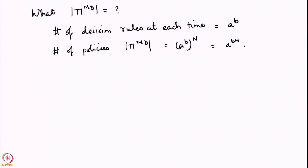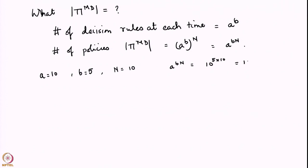Let us run through this calculation and see how big this number could be. Suppose a is 10, meaning you have 10 possible actions, and suppose you have 5 possible states, so b is 5, and a time horizon of 10. Then a^(b times n) becomes 10 raised to 5 times 10, which is 10 raised to 50. This is the total number of Markov deterministic policies in this problem.